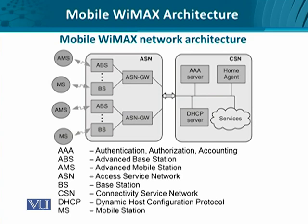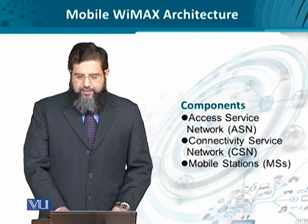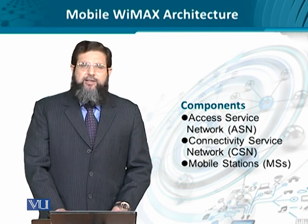Then we have the access service network gateways, which provide connectivity between the mobile station and the connectivity service network. The connectivity service network is more or less the core network side that hosts servers responsible for providing both bearer paths and signaling network. So in summary, we have the mobile stations, the access service network, and the connectivity service network.